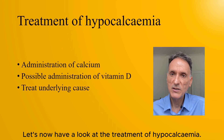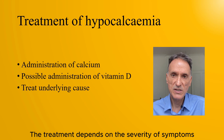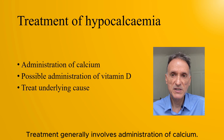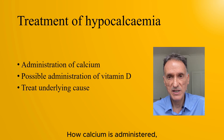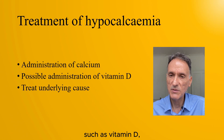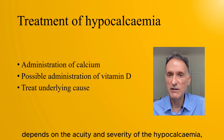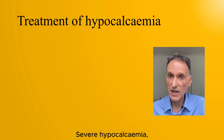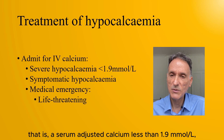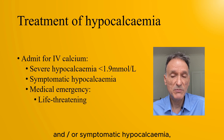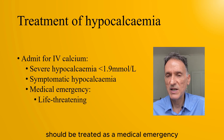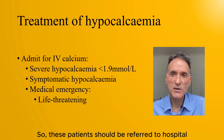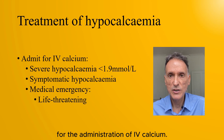Let's now have a look at the treatment of hypocalcemia. The treatment depends on the severity of symptoms and underlying condition, and generally involves administration of calcium. How calcium is administered, and the need for additional agents such as vitamin D, depends on the acuity and severity of the hypocalcemia as well as the underlying cause. Severe hypocalcemia — that is, a serum-adjusted calcium less than 1.9 — and/or symptomatic hypocalcemia should be treated as a medical emergency, as it can be life-threatening. This patient should be referred to hospital for the administration of IV calcium.